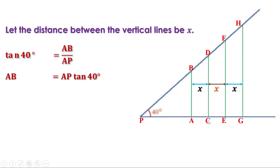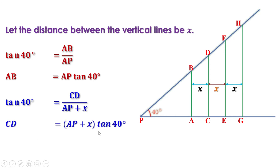Now consider the right angle triangle PCD. CD is the opposite side and PC is the adjacent side, which equals AP plus AC, or AP plus X. So we can write tan 40 equals CD by (AP plus X). Taking AP plus X to the other side, CD equals (AP plus X) into tan 40, which equals AP·tan 40 plus X·tan 40. Now look at AB and CD: AB is AP·tan 40 and CD is AP·tan 40 plus X·tan 40. That means X·tan 40 is added to AB to get CD.